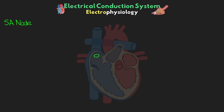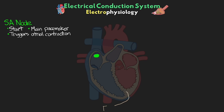The SA node is located in the right atrium, near the junction with the superior vena cava. This is the start of the electrical conduction system and the heart's main pacemaker. The activation of the SA node is what triggers atrial contraction to propagate from one atrial myocyte to the next. It's important to know that the fibrous tissue of the septum divides both our left and right side, as well as our atria and ventricles.